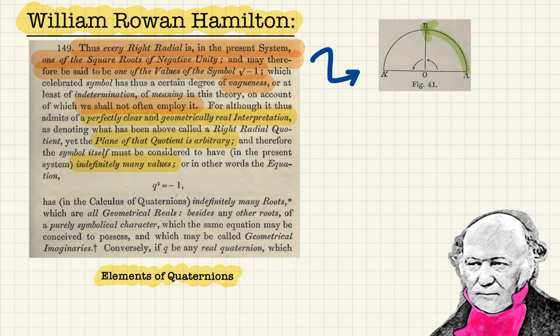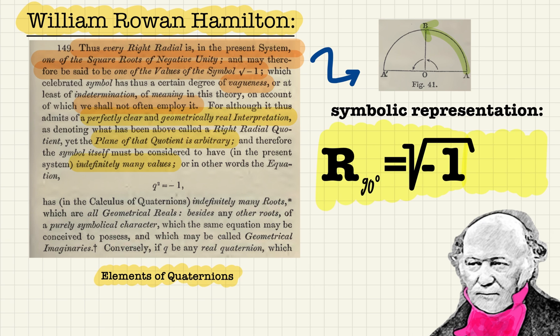So, William, take it away. Thus, if we write radial R 180, in the present system one of the square roots of negative unity and may therefore be said to be one of the values of the symbol square root of minus 1. We see that we have found a perfectly clear and geometrically real interpretation for the square root of minus 1.